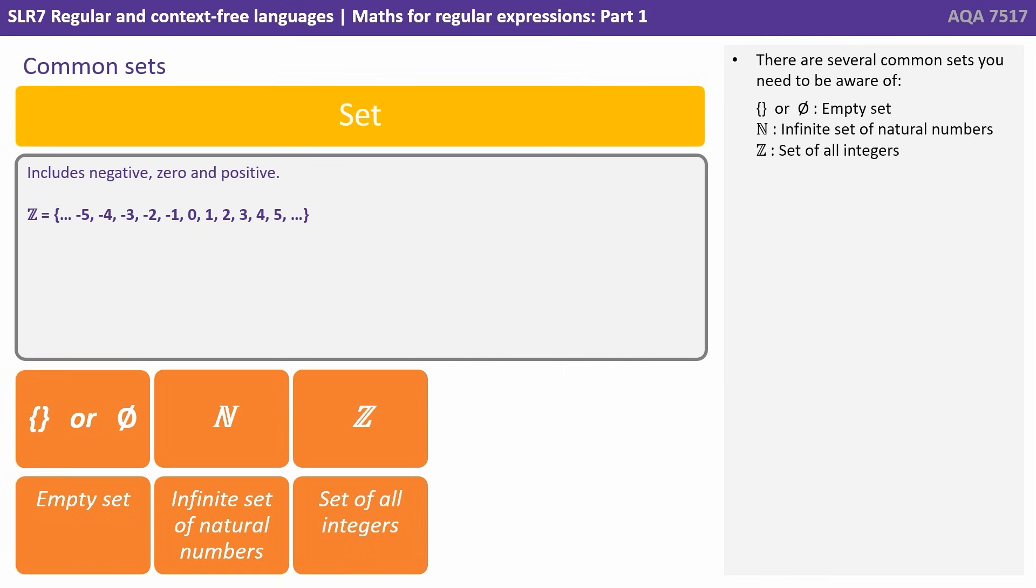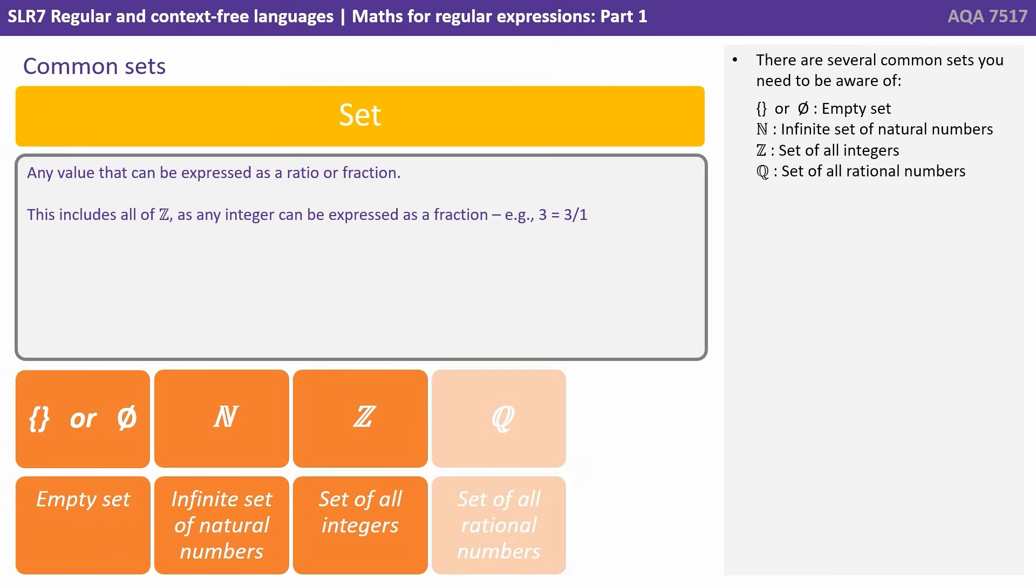This capital Z refers to the set of all integers. This includes negative, zero and positive. We then have the capital letter Q. This is the set of all rational numbers. So this is any value that can be expressed as a ratio or fraction. And this therefore includes all of set Z, as any integer can be expressed as a fraction.